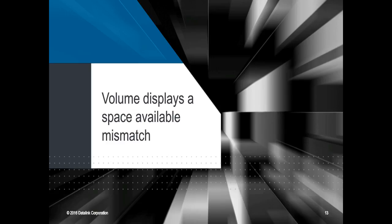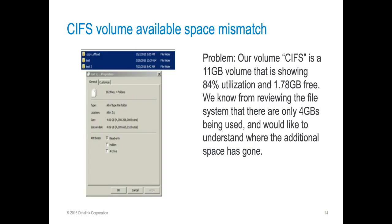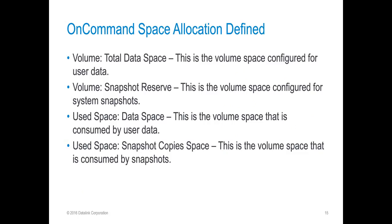The second issue I wanted to discuss is when a volume displays a space available mismatch, particularly in CIFS. We have a user calling in stating that their SIFTS volume is showing at 84% utilization and only 1.78 gigs free. However, knowing that the data involved in this volume is only 4 gigs, they're curious as to where this additional space has gone. To begin, I just wanted to define some of the different terms that OnCommand System Manager uses for the space tab when viewing volumes.